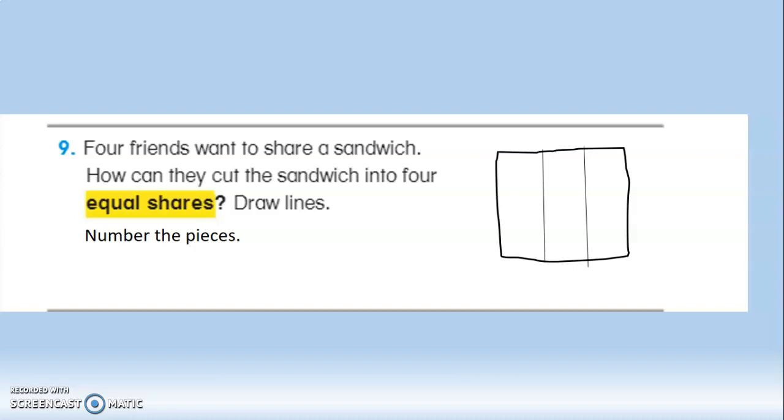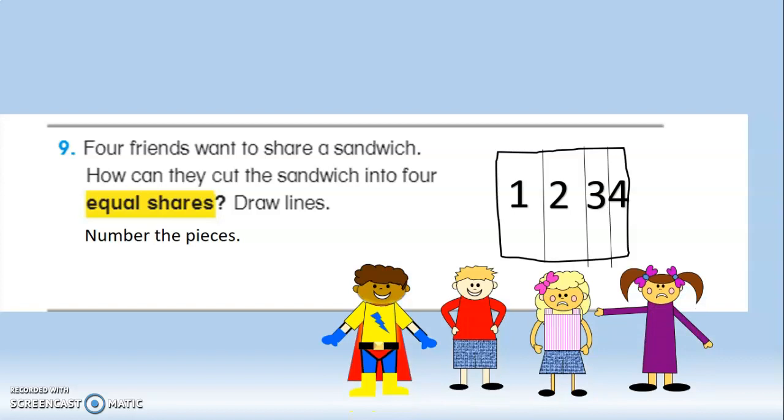How about like that? Uh-oh. One, two, three, four. The first two pieces are huge. Three is smaller and four is very small. The girls are mad. The boys are trying to cheat them.